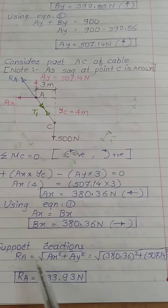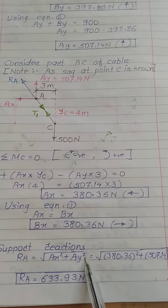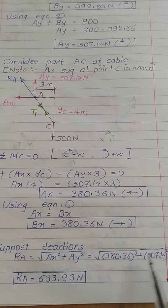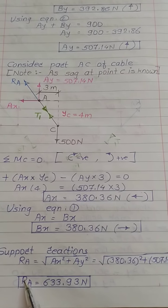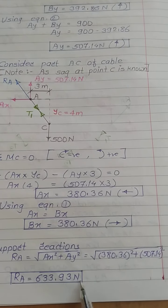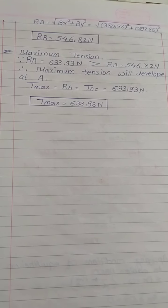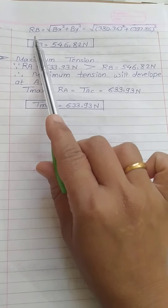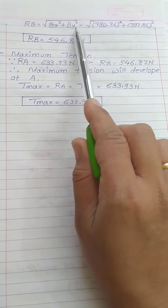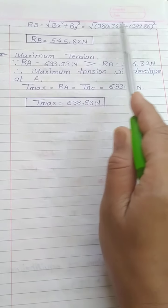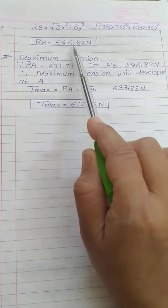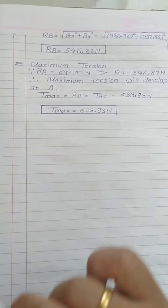Now we find the support reactions. Ra = √(Ax² + Ay²). Substituting the known component values gives Ra = 633.93 N. Similarly, Rb = √(Bx² + By²), and substituting gives Rb = 546.82 N.